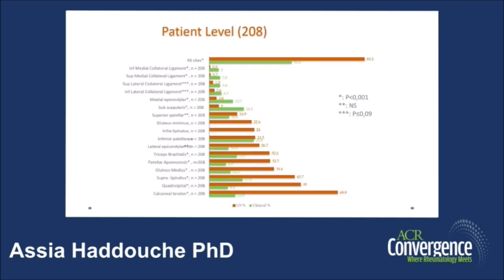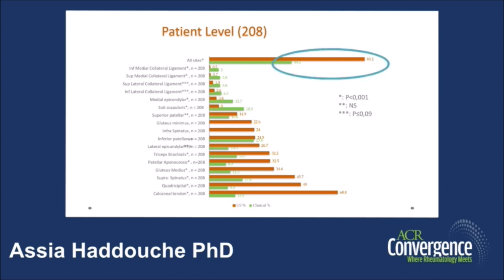For the prevalence of enthesitis at the patient level, as seen on this graph — clinical prevalence in green and ultrasound prevalence in orange — at least one clinical enthesitis was present in 44% of patients, with the highest frequency found at the level of the inferior insertion of the patellar ligament. At least one ultrasound enthesitis was found in 83% of patients, and the highest frequency was found in the Achilles enthesis at 69%. Ultrasound prevalence was significantly higher than clinical prevalence at most enthesis sites, notably the Achilles tendon.